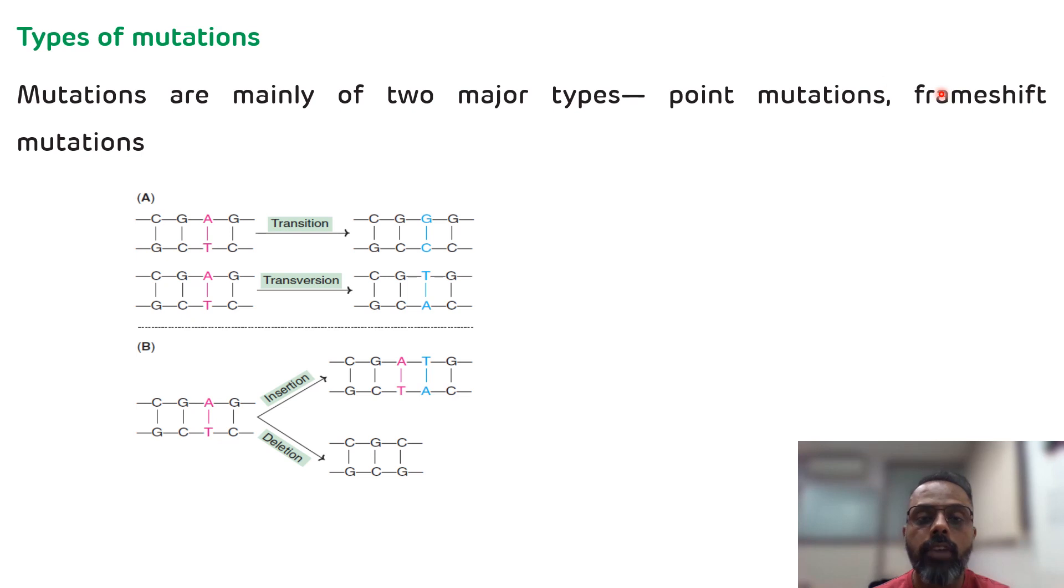And in the frameshift mutation, it occurs due to the insertion of base pairs or deletion of base pairs. And then there is a total change in the frame. So that is the frameshift mutation and you should be very clear that frameshift mutation is more dangerous as compared to the point mutation. These are the types of mutation.